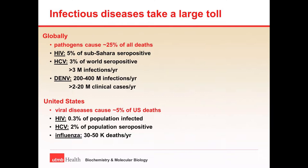Then we have a disease that we have been working on called dengue, which is caused by a virus called, remarkably enough, dengue virus. It's estimated that there are upwards of two to four hundred million infections a year. Now fortunately, many of those infections are benign, such that of the 200 to 400 million infections, typically in a year somewhere between two and perhaps as many as 20 million people actually are sick enough that they go into a clinic.